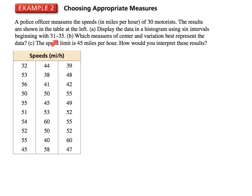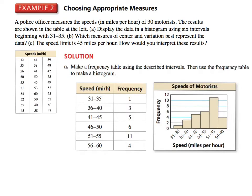So we go 31 to 35, 36 to 40, 41 to 45. If we put it as a frequency table to show the intervals, it would look like this. From 31 to 35 that's happened only once; 36 to 40 happened three times, and we graph those. This shows the speed in miles per hour in all intervals of five and the frequency.